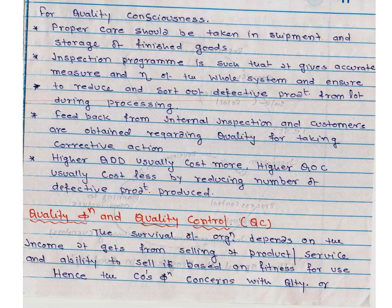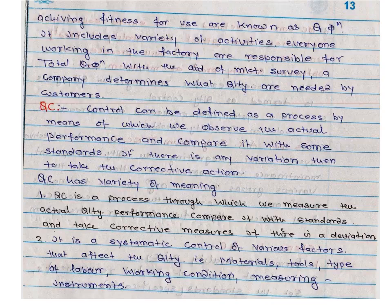Now, the quality function and quality control. The survival of any organization mainly depends on the income it gets from selling its products or services. The ability to sell is based on fitness for use. Hence, the company's functions concerned with quality — achieving the fitness for use — are known as quality functions. It includes a variety of activities; everyone working in the factory is responsible for total quality functions.